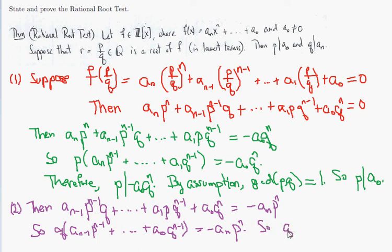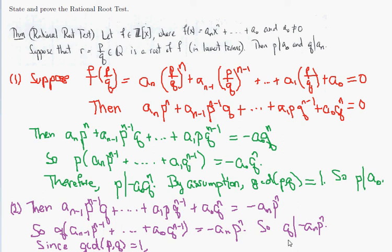So q divides negative aₙ·pⁿ. Once again, q and p have no common factors, so the GCD of p and q equals 1. Therefore q and pⁿ also have no common factors, and the only possibility is that q divides aₙ, based on the theorem we proved in the number theory section of the course. And that ends the proof.